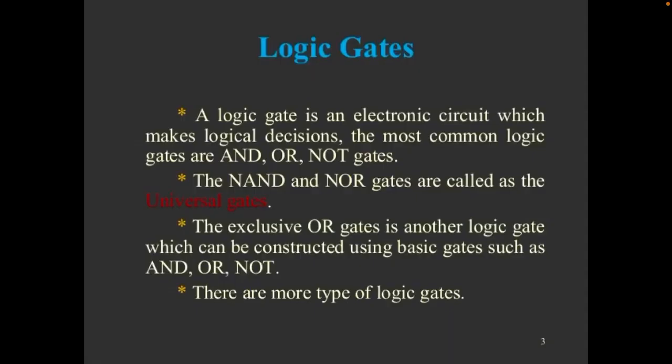Logic gates: A logic gate is an electronic circuit which makes logic decisions. The most common logic gates are AND, OR, NOT gates. The AND and NOT gates are called universal gates. The exclusive OR gate is another logic gate which can be constructed using basic gates such as AND, OR, NOT. There are more types of logic gates.